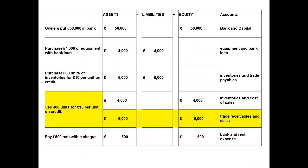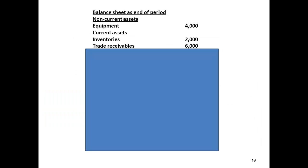The second type of current asset relates to any monies that the business may be owed after making credit sales. I have identified one transaction here which shows the business is owed £6,000. We class this as trade receivables and enter the figure of £6,000.